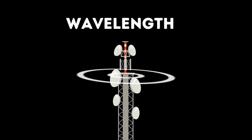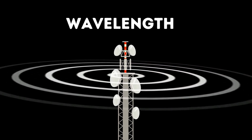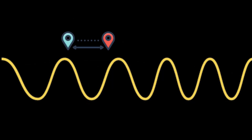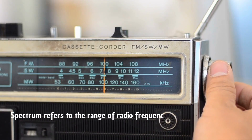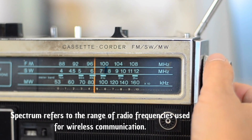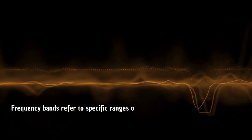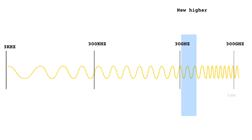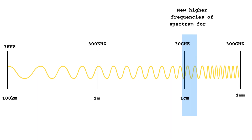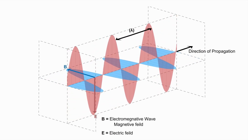Wavelength is like the distance between two hills in a wave. Just like how the distance between two hills can be big or small, the wavelength of a radio signal can be big or small too. When the distance is big, the wave is spread out; when the distance is small, the wave is more squished together. Spectrum refers to the range of radio frequencies used for wireless communication. Frequency bands refer to specific ranges of radio frequencies allocated for different types of wireless communication, each with its own unique characteristics such as wavelength and capacity to transmit data.